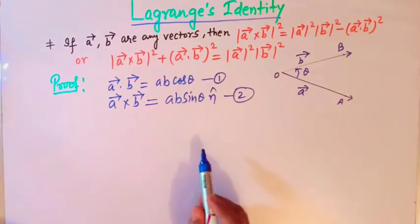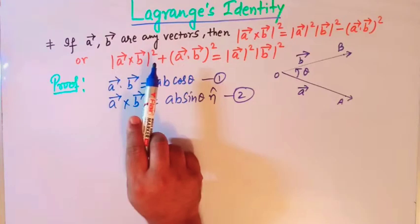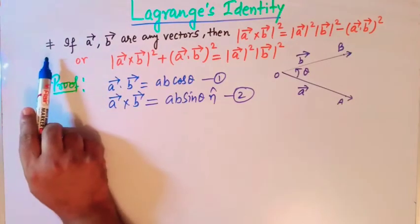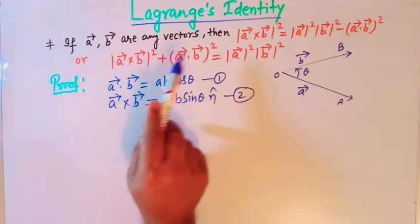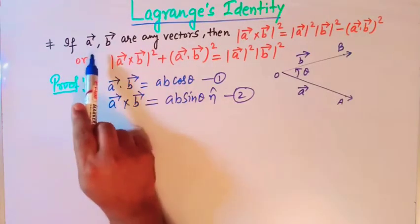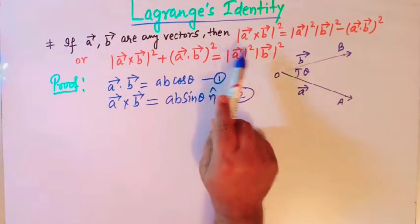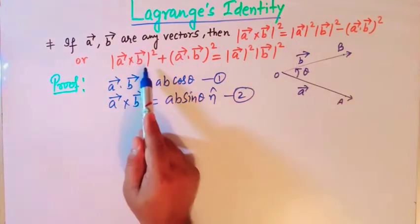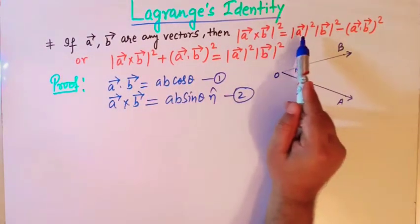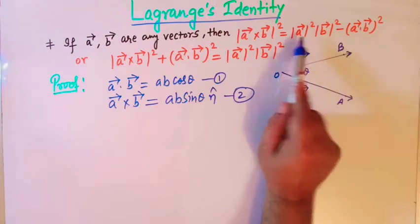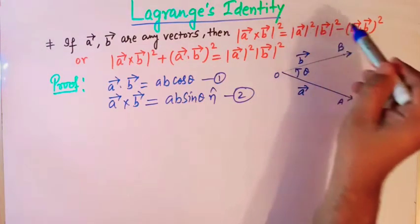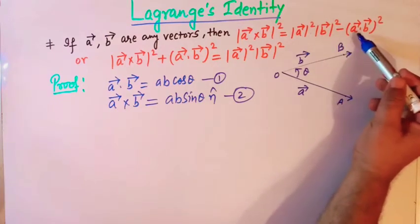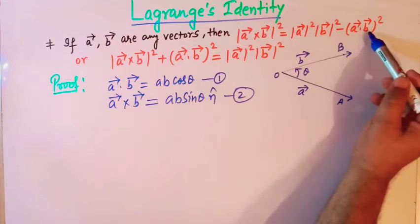Hello viewers. In today's lecture we are going to solve some problems related to Lagrange's identity in vector algebra. The statement of Lagrange's identity is: if A and B are any two vectors, then the square of the magnitude of A×B is equal to the square of the magnitude of vector A multiplied by the square of the magnitude of vector B, minus the square of the scalar product of vector A and vector B.